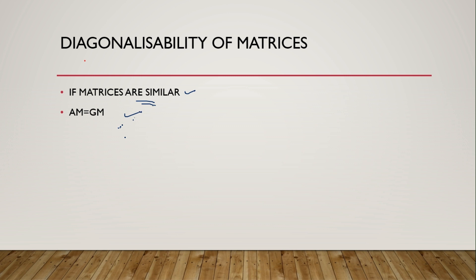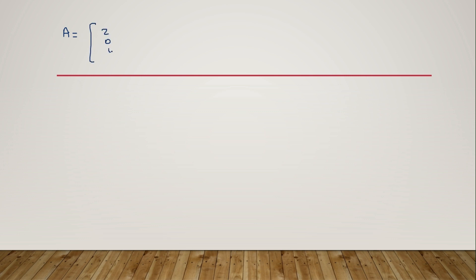Let me tell you what these mean with an example. Let's say you have a matrix A with elements: row one [2, 0, 0], row two [0, 2, 0], row three [1, 0, 1]. You are supposed to check whether it is diagonalizable or not. You have to find the algebraic multiplicity and geometric multiplicity, because we cannot check similarity — we don't have another matrix for those seven properties.